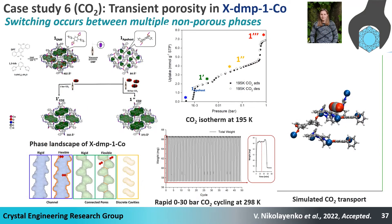I will save the most unusual for last — transient porosity in a network we call XDMP-1-CO, studied by my former postdoc Varya. She noticed that a clathrate phase could be formed and converted to other clathrate phases as pressure was increased before finally reaching a porous phase, and these transformations were fully reversible. So here we're looking at gas sorption in a non-porous material between clathrate phases, which could have significant implications for storage of the most volatile gases and vapors. The transient porosity is enabled by thermal motion in the coordination network, according to modeling.